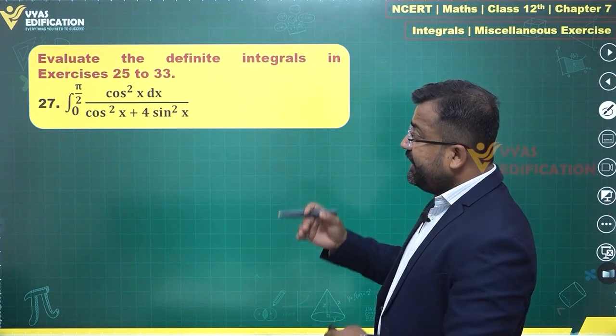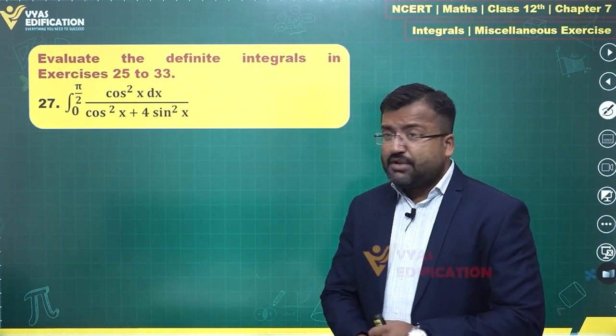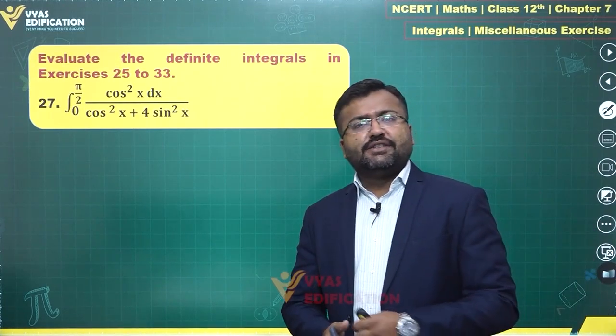Question number 27 says integrate from 0 to π/2, cos²x dx divided by cos²x plus 4sin²x. How will we handle this one?